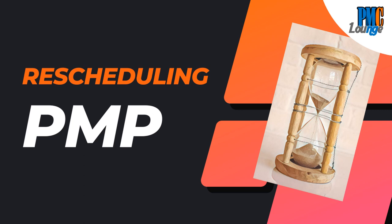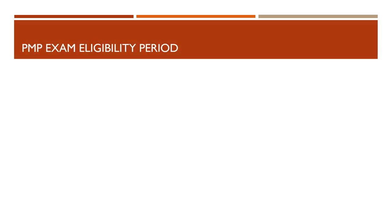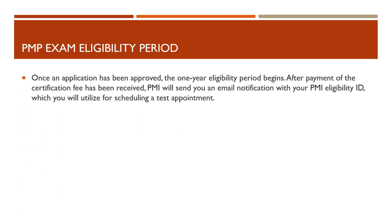In certain cases it is not possible to reschedule your exam. First of all, let's talk about the PMP exam eligibility period. There is actually an eligibility period of one year after your exam application is approved. So if you want to take up the PMP exam, the first thing you're going to do is fill out the PMP exam application form. Once it has been approved, from that day you get a one-year time period to appear for your PMP exam.